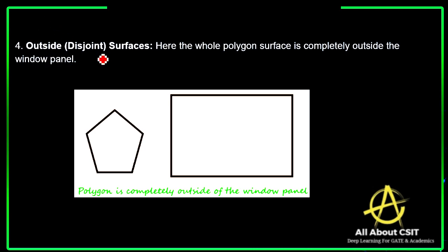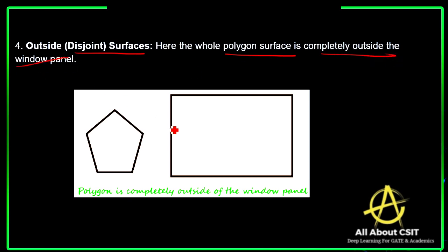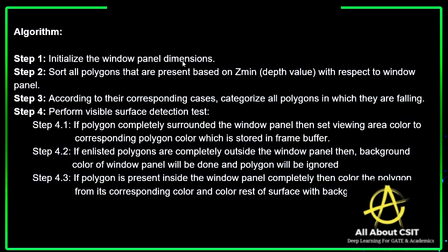The last case is outside, also called the disjoint surface. Here the complete polygon is outside the window panel — the whole polygon surface is completely outside the window panel.